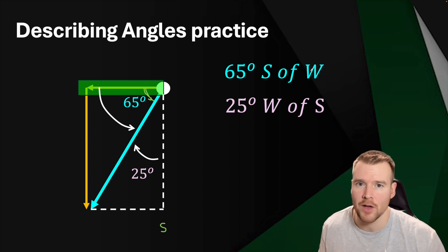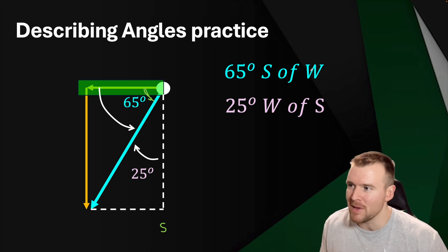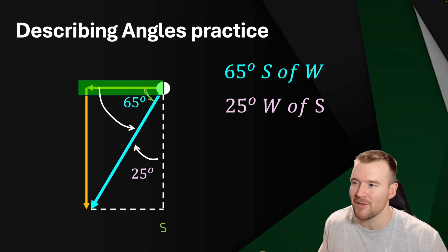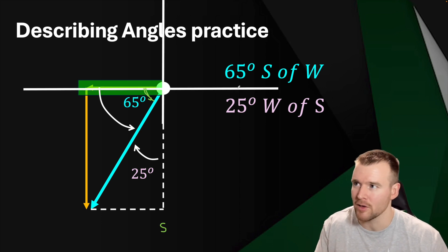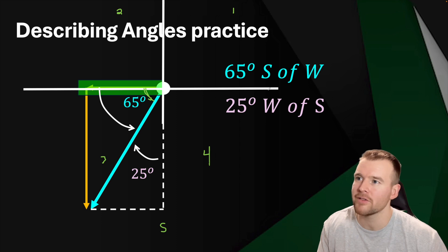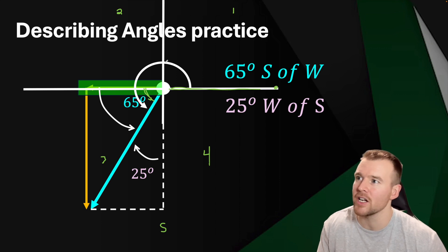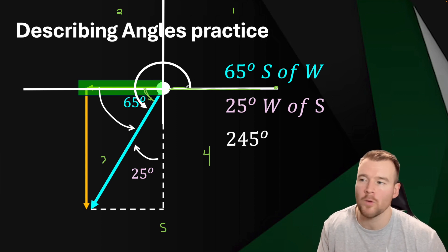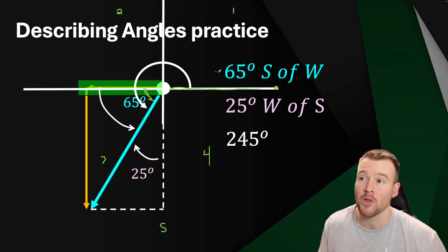Both those ways of describing angles using north, east, south, and west is called the navigation method. There's one more method — the Cartesian method — which references directly to the right, like a Cartesian plane with quadrants. Everything measures how far from the line directly right, going counterclockwise. From directly right, we go 90, 180, then 65 more degrees, giving us 180 plus 65 equals 245 degrees. This doesn't come up as commonly, but these are three ways to describe the same angle.